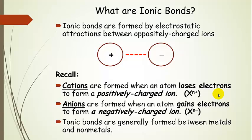Now anions are the opposite. An atom that starts off neutral gains electrons and forms a negatively charged ion. That means it has more electrons than protons. That's where that negative charge comes from. Ionic bonds are generally formed between metals and nonmetals.